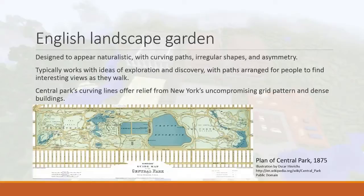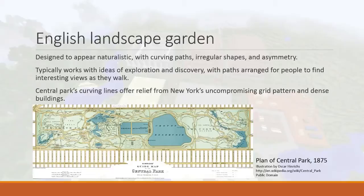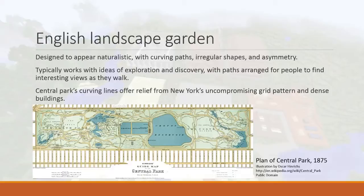In contrast, this is a map of Central Park from 1875 in New York — one example of an English landscape garden, which is designed to appear naturalistic. It's almost the exact opposite of the French formal garden. To appear naturalistic, there are curving paths, irregular shapes, and asymmetry. If you know New York, Manhattan Island has a very rigid grid, and in the middle of it is this park. There's no point adding more structure and order to the garden when you're already surrounded by rigid grid.